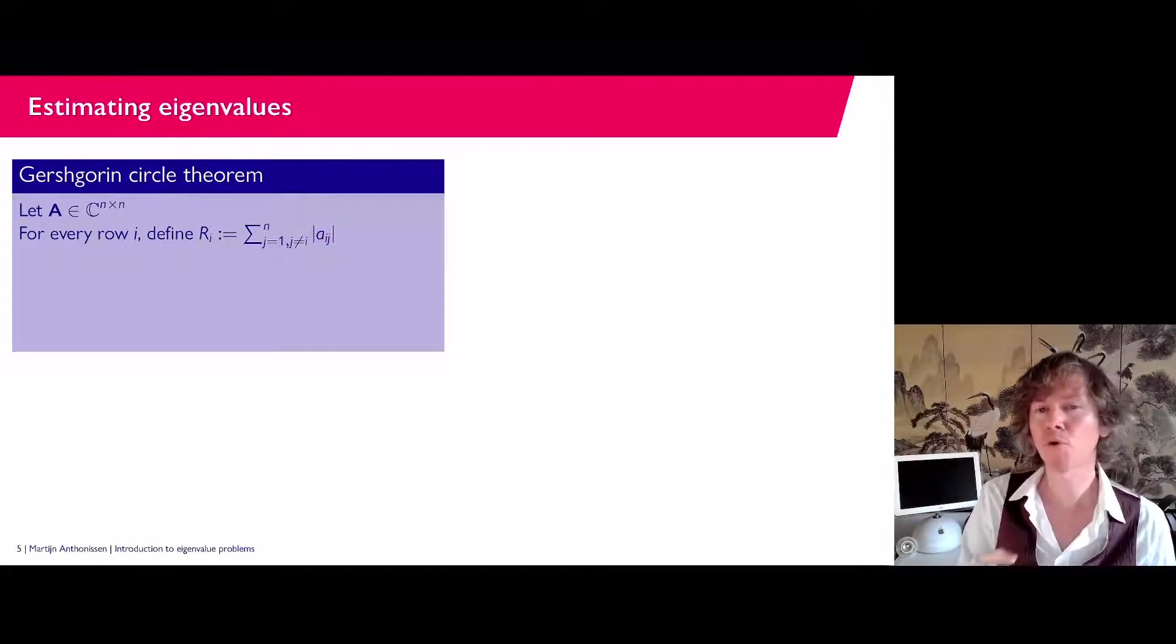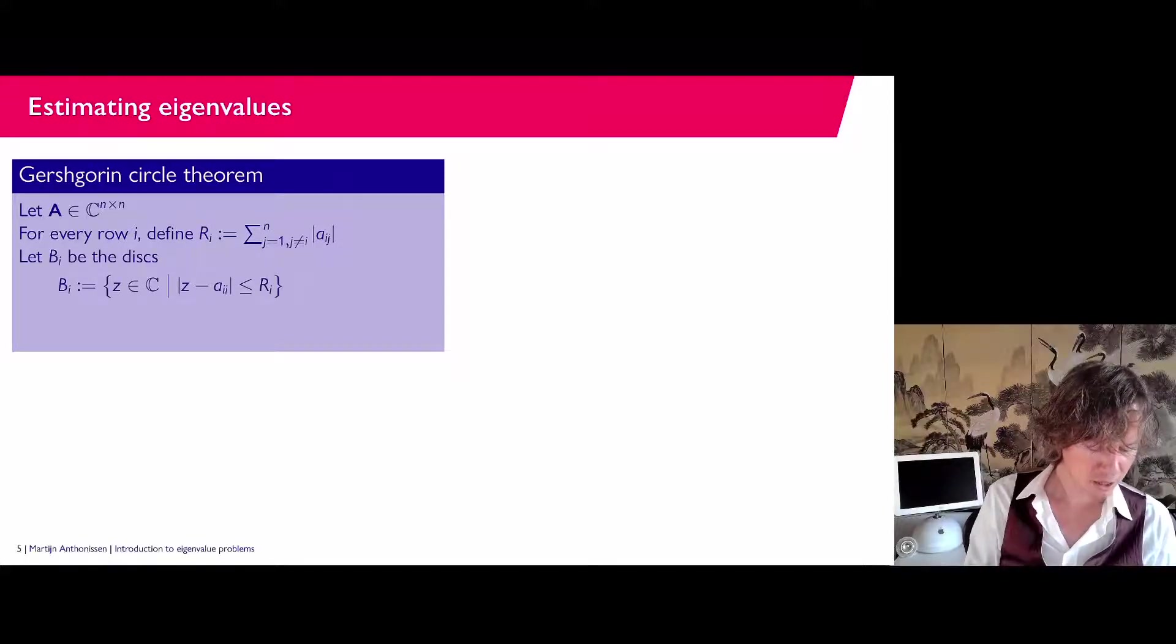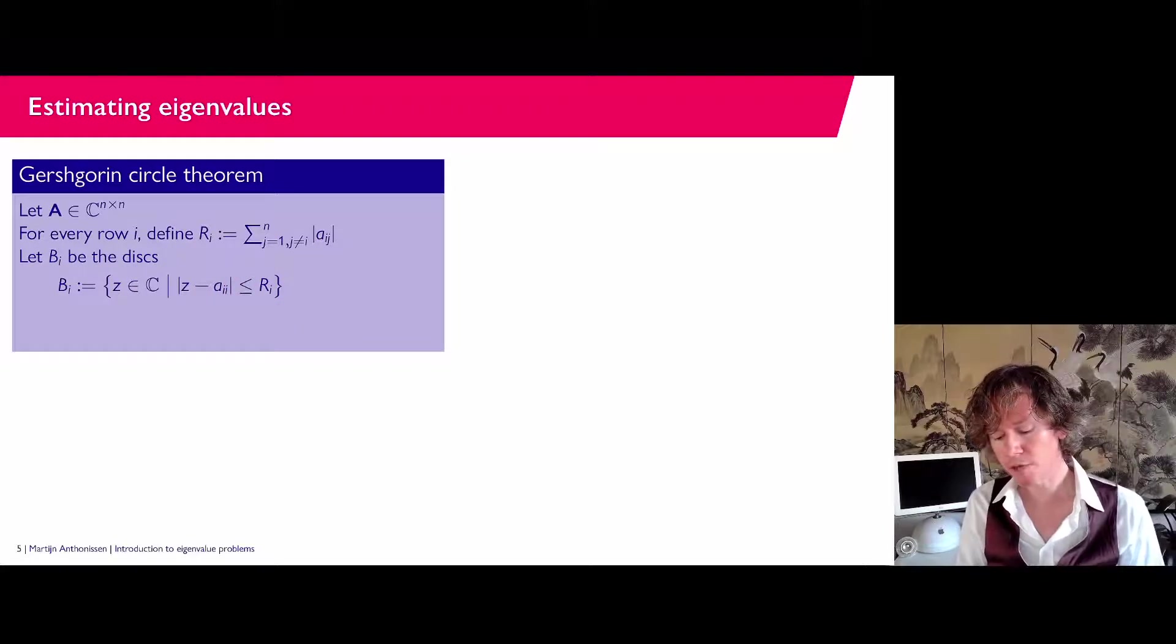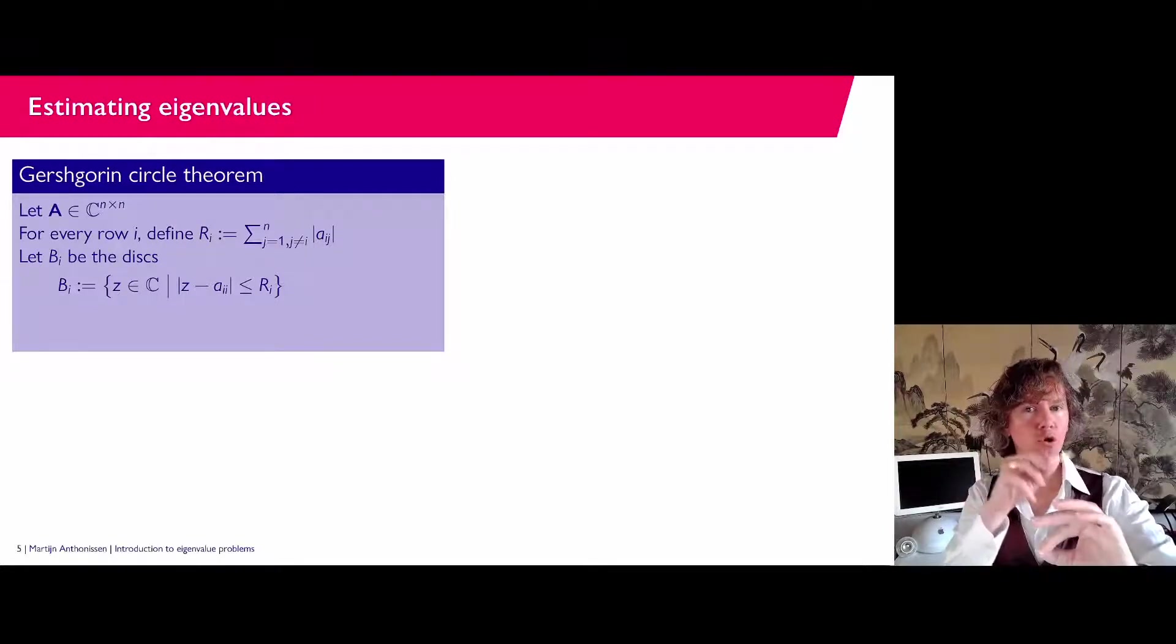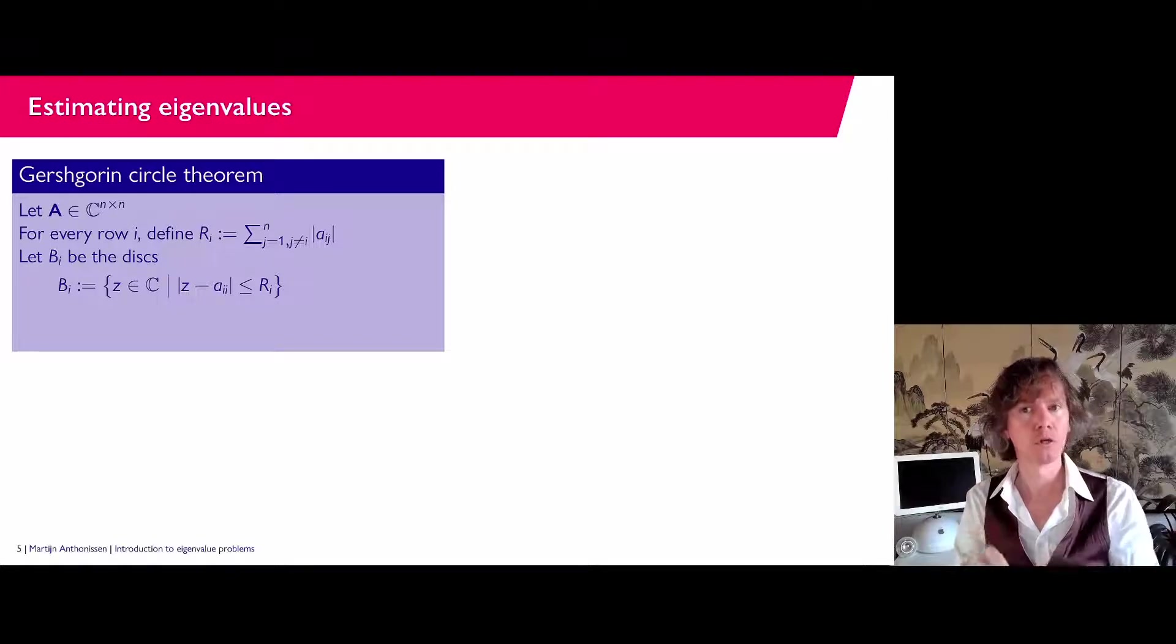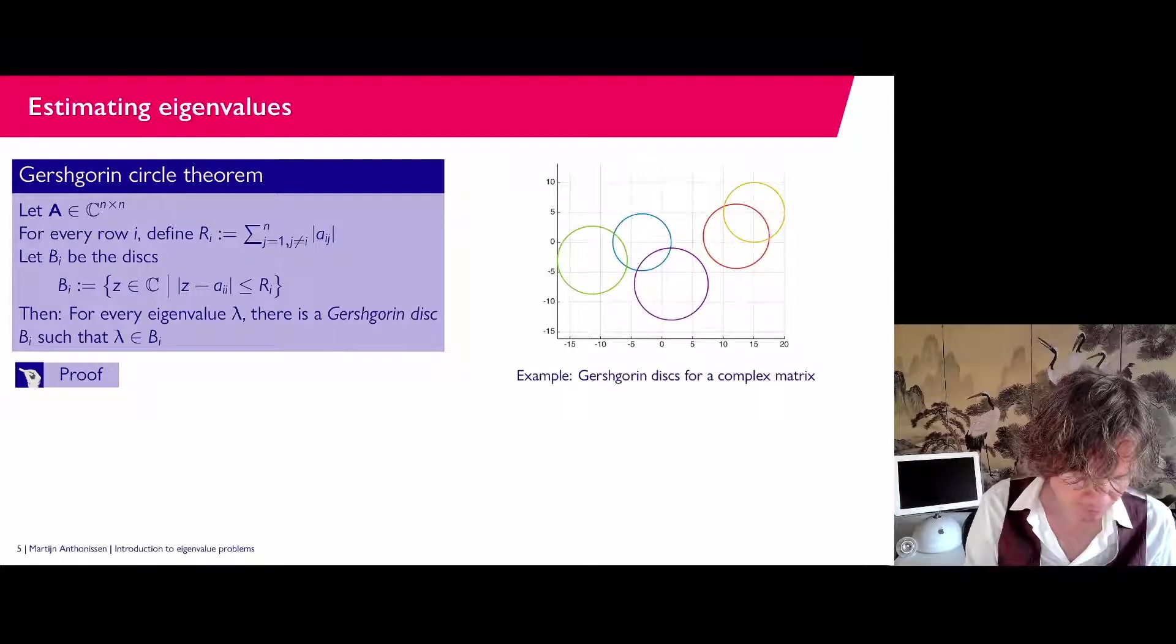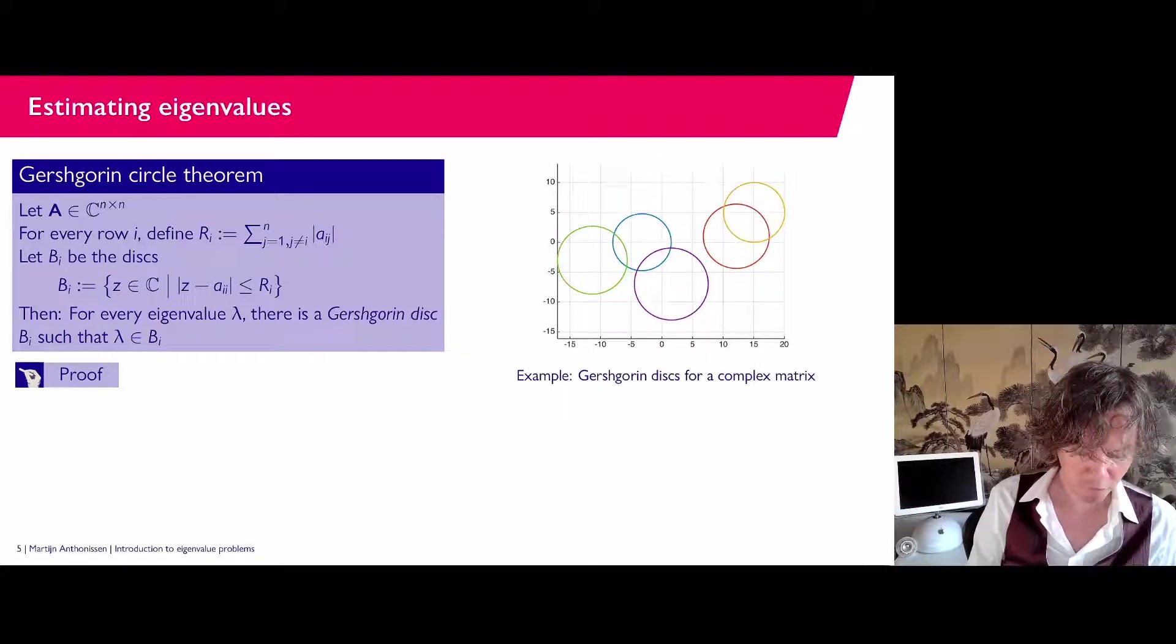We only sum per row the off-diagonal entries. Then I'm going to make disks. And those disks, called B_i here, have as their center in the complex plane the diagonal entry. And then as radius this r_i. So for every row of the matrix, what I'm going to do is I'm going to locate the diagonal entry in the complex plane. And then I'm going to draw a little circle around it. And that circle has radius sum of the absolute value of the off-diagonal entries.